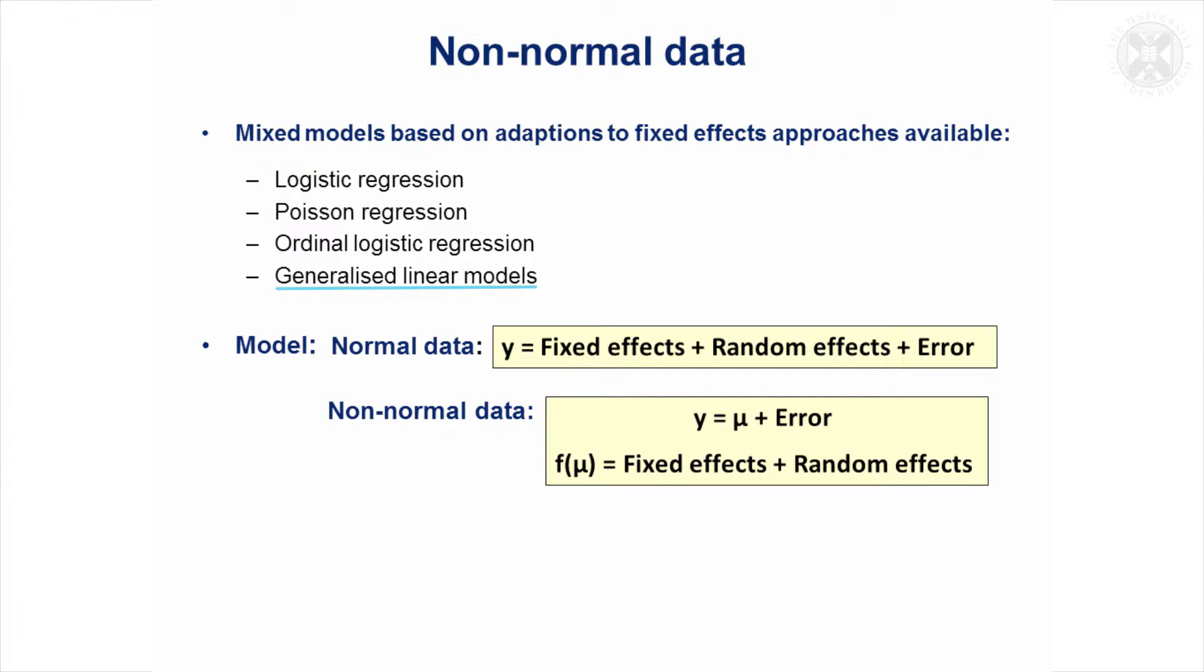To recap on what they are, if you've got normal data and you're fitting the ordinary mixed model, you could write your model like this: Your outcome is equal to some fixed effects, some random effects, and an error term. But if it's non-normal, the errors are not going to be normally distributed and you can write your model in a slightly different way. The outcome is equal to a vector of expected values plus an error term. But of course, it's not going to have a normal distribution. You can relate these expected values to the effects you're fitting in the models by applying a transformation, which I've given as F here. That transformation function is going to relate to the type of data.